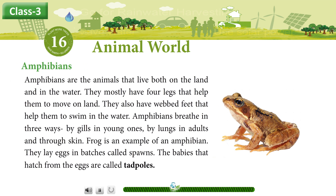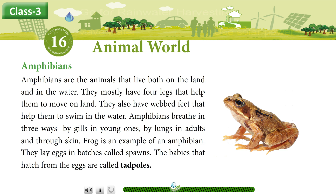Amphibians. Amphibians are the animals that live both on the land and in the water. They mostly have four legs that help them to move on land. They also have webbed feet that help them to swim in the water. Amphibians breathe in three ways: by gills in young ones, by lungs in adults, and through skin.